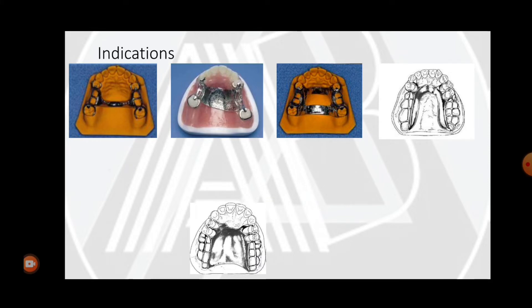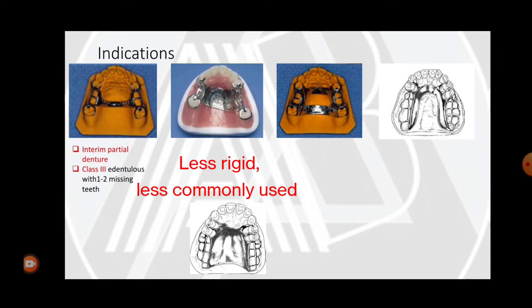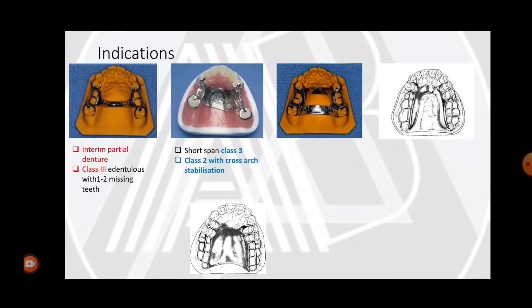Indications for the palatal bar: it is usually used in interim partial dentures or Class 3 edentulous arches with one or two missing teeth. Because it is narrow, it does not provide adequate rigidity, so the palatal bar is only used in cases with one or two missing teeth.